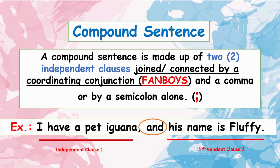Now, let's talk about a compound sentence. What is a compound sentence? A compound sentence is made up of two independent clauses joined or connected by a coordinating conjunction and a comma, or sometimes by a semicolon alone. For example: I have a pet iguana and his name is Fluffy. The two independent clauses in the given example are connected with a coordinating conjunction 'and.' This is an example of a compound sentence.